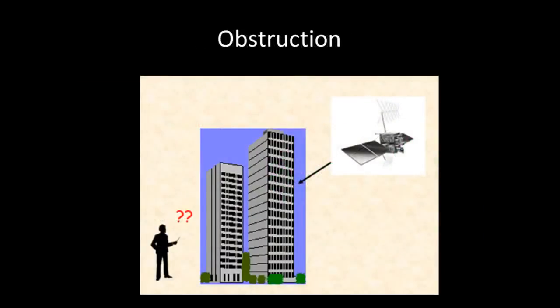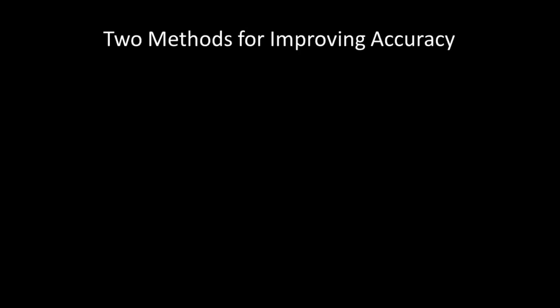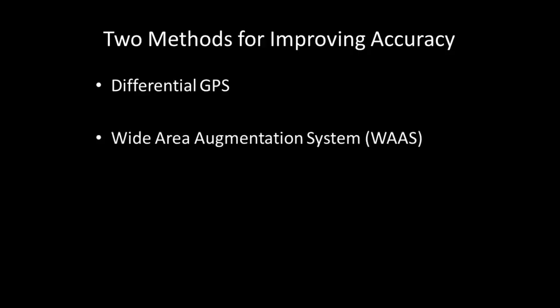One obvious inaccuracy source is obstruction. GPS receivers do not work well in areas with too many obstacles, such as forests, cities, and steep mountains. Given the fact that there are many factors that can cause inaccuracy in GPS signals, methods have been developed for improving GPS accuracy. In the following slides, I describe two of those methods. Differential GPS and Wide Area Augmentation System, or WAAS.